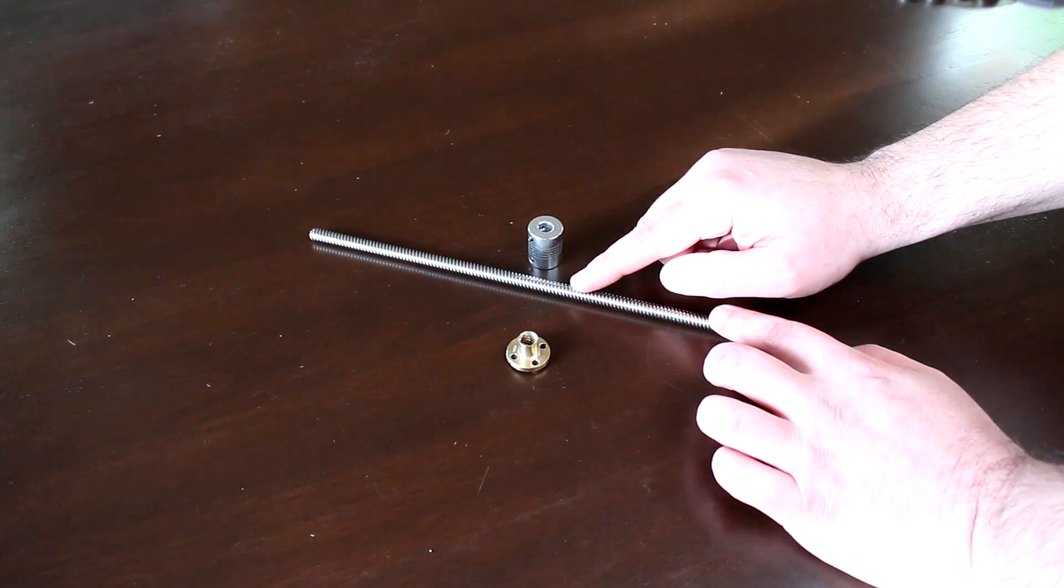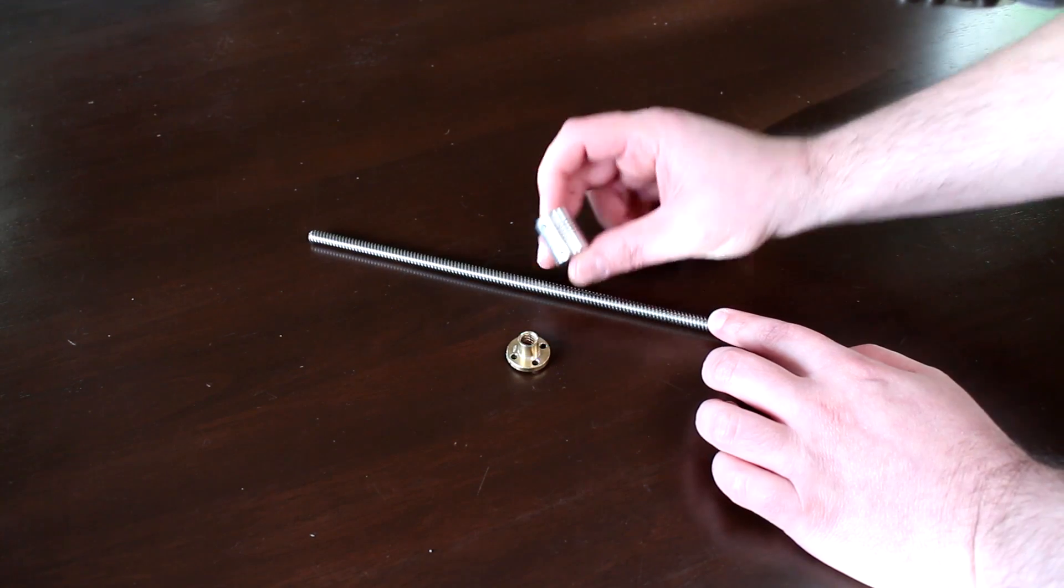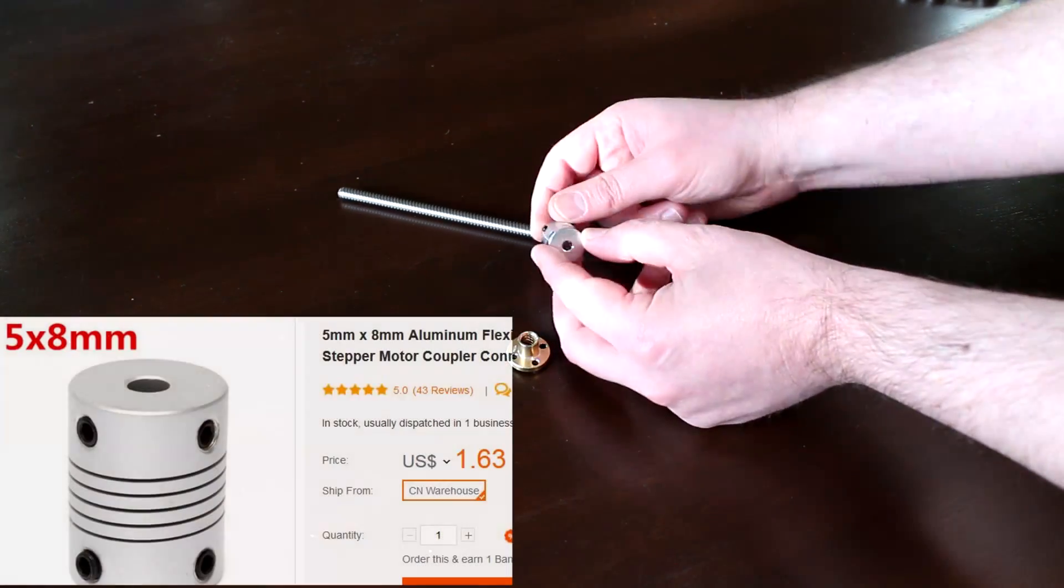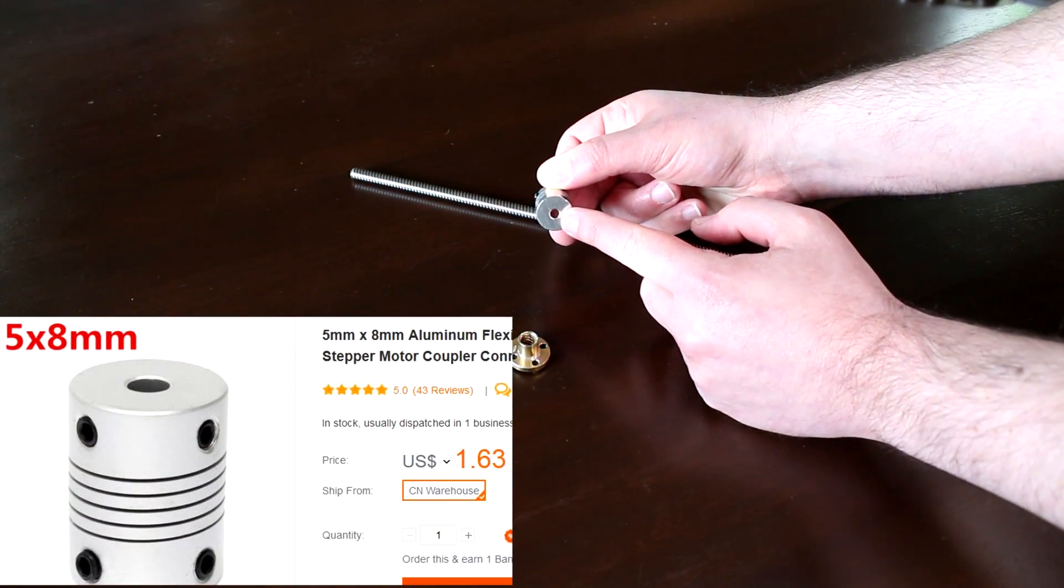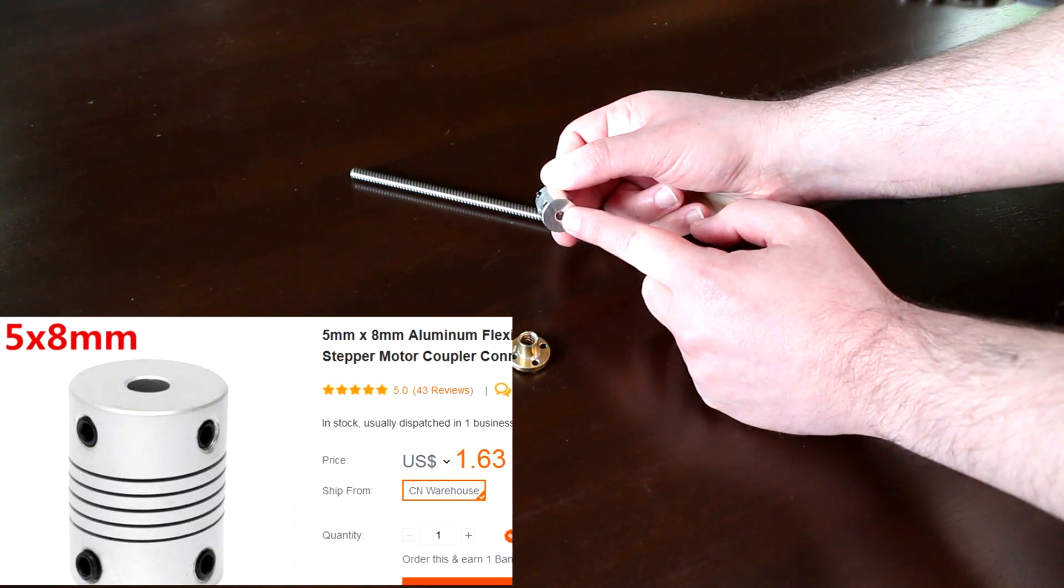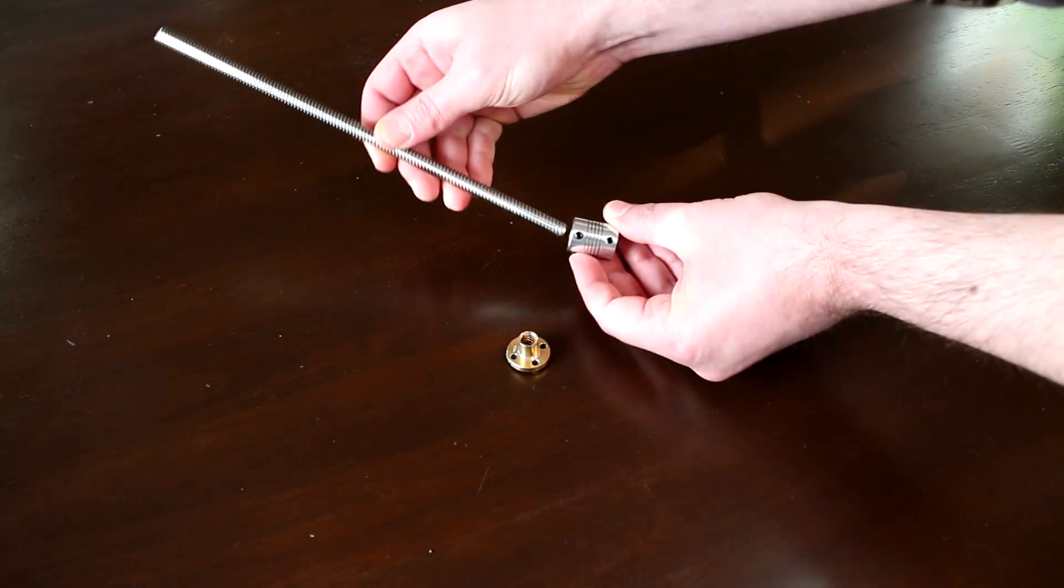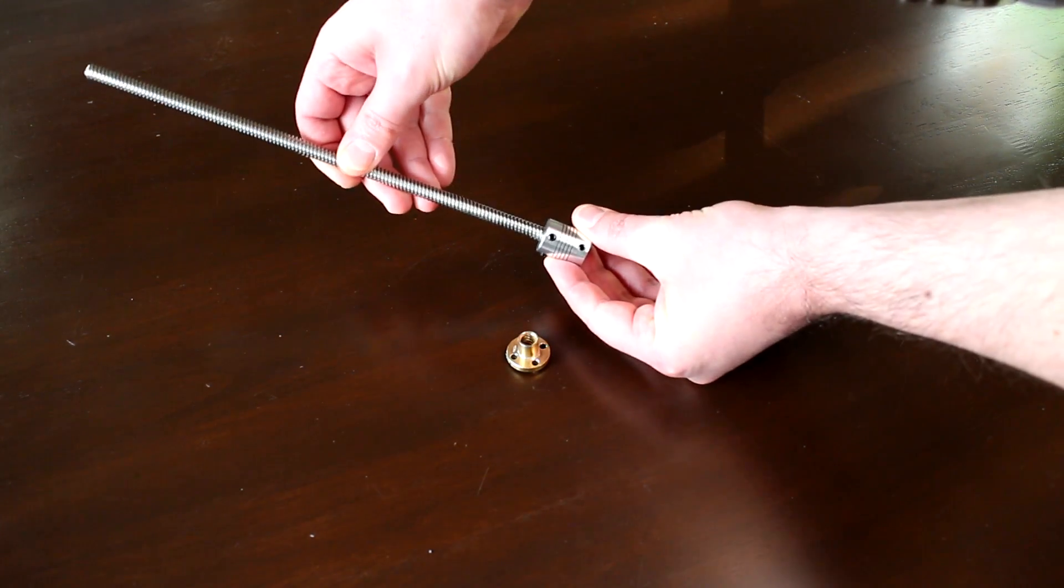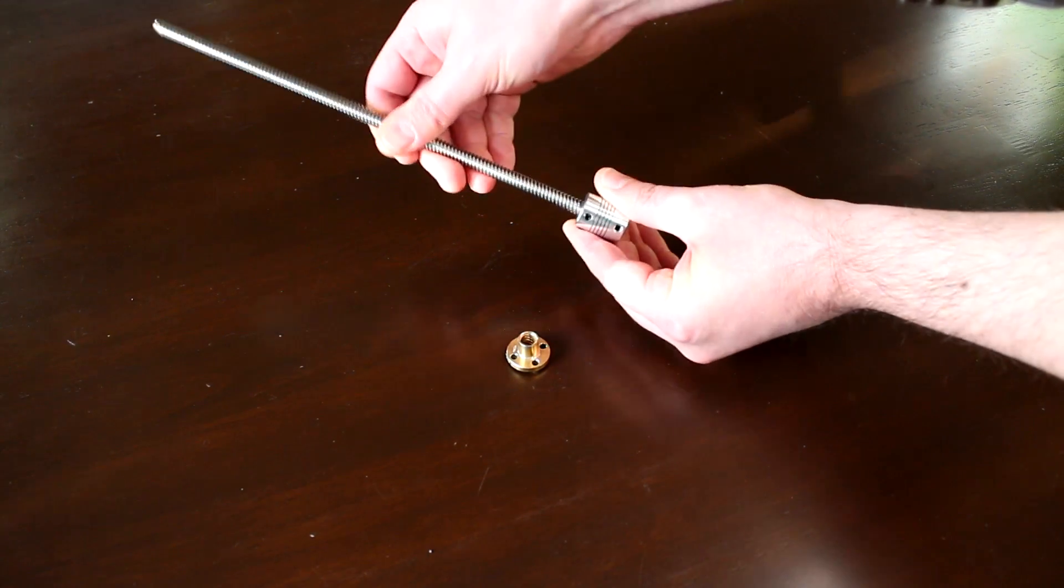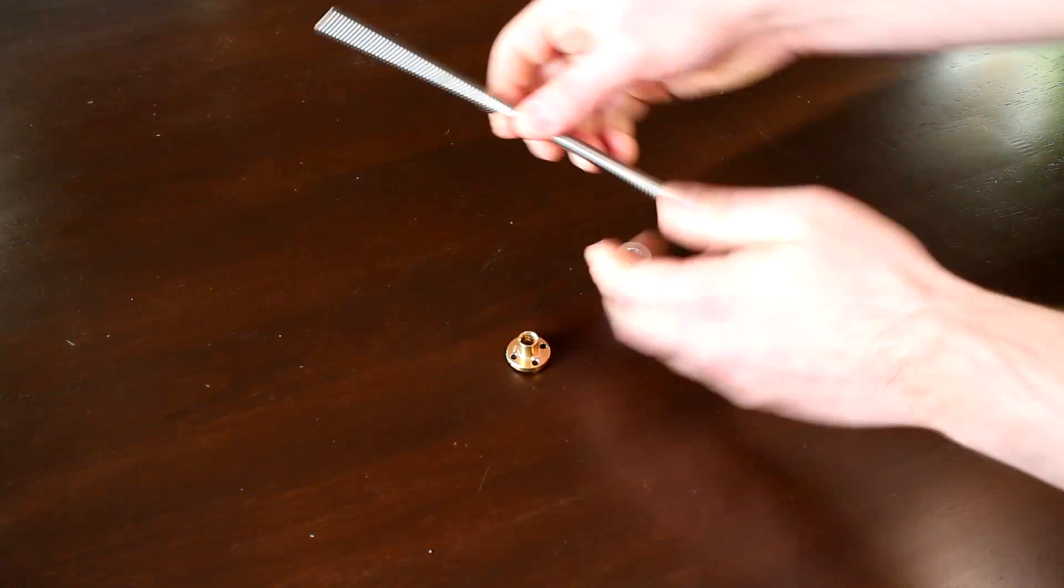To join the eight millimeter lead screw to the stepper motor, you need a shaft coupler. I bought this online. You can see it has the five millimeter diameter for the shaft of the motor here and eight millimeter for the lead screw up here. The lead screw simply slots in like that. It's a nice tight fit, and I'll show you why it's nice and tight.